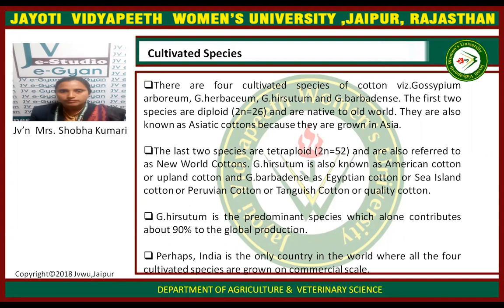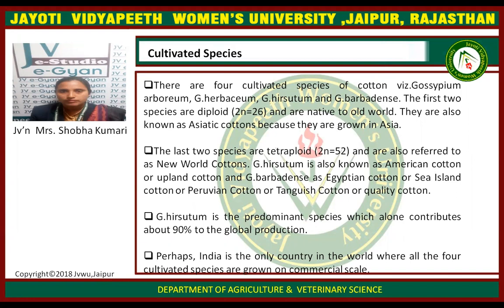The last two species are tetraploid. Gossypium Hirsutum and Gossypium Barbadense are tetraploid and are also referred to as New World Cotton. Gossypium Hirsutum is also known as American Cotton or Upland Cotton, and Gossypium Barbadense is known as Egyptian Cotton, Sea Island Cotton, Peruvian Cotton, or Tanguis Cotton. Gossypium Hirsutum is the predominant species which alone contributes about 90 percent to the global production. India is perhaps the only country in the world where all four cultivated species are grown on a commercial scale.